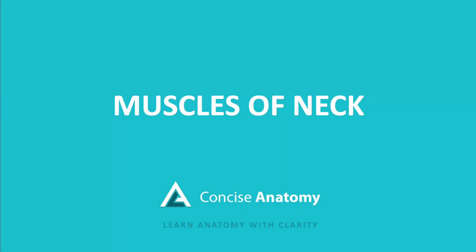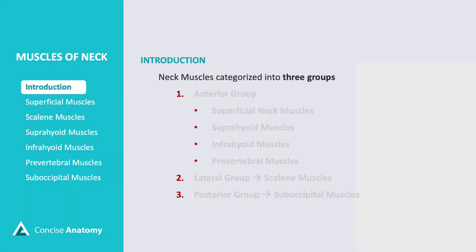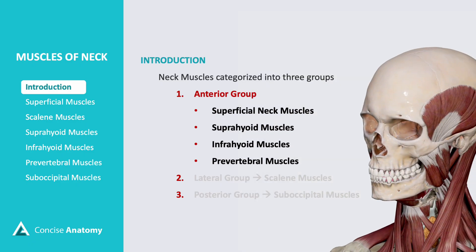Let's talk about the muscles of the neck. The neck muscles are divided into three main groups based on function and location. The anterior group includes superficial muscles, suprahyoid and infrahyoid muscles, and prevertebral muscles. The lateral group consists of the scalene muscles, which assist in neck movement and respiration. And the posterior group is composed of suboccipital muscles, responsible for fine head movements and stabilization.